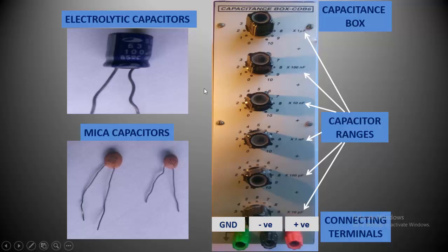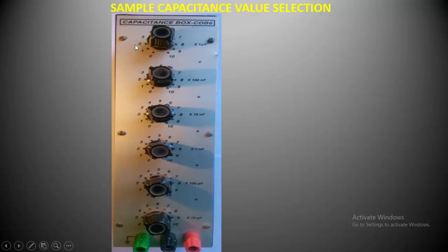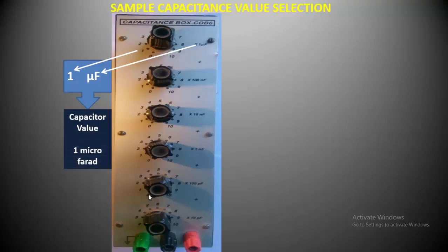We will try to understand how to select the values in the capacitance boxes using 2 examples. In this first example, you will see that a single knob is on 1 and its corresponding range is 1 microfarad. All other knobs are on 0. So the total value of the selected capacitance will be 1 microfarad.